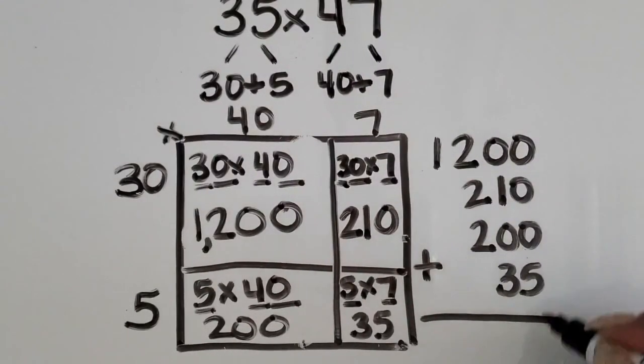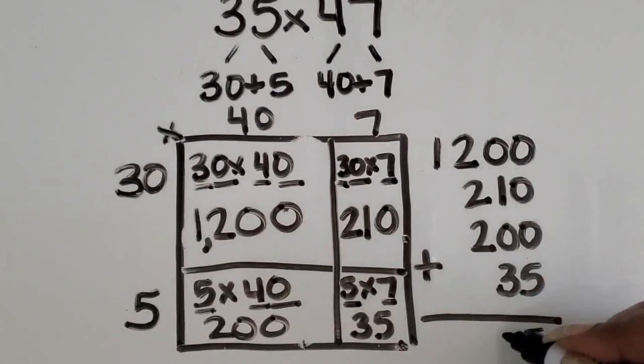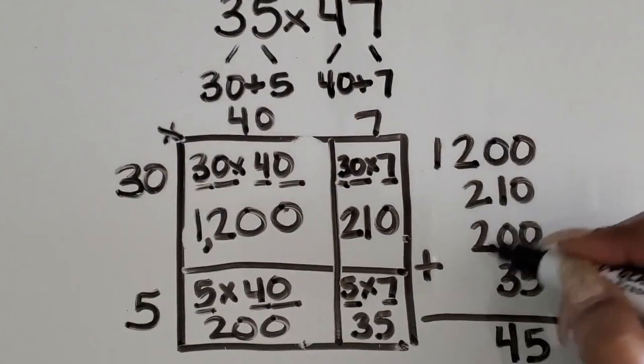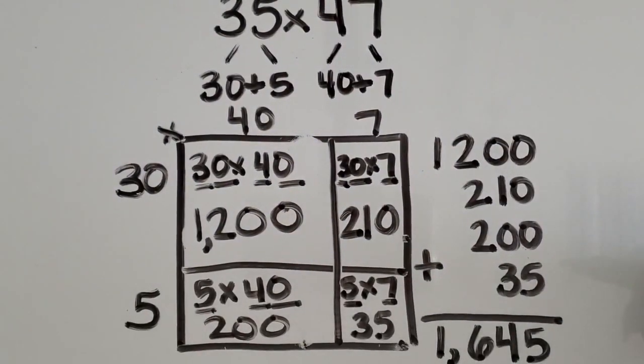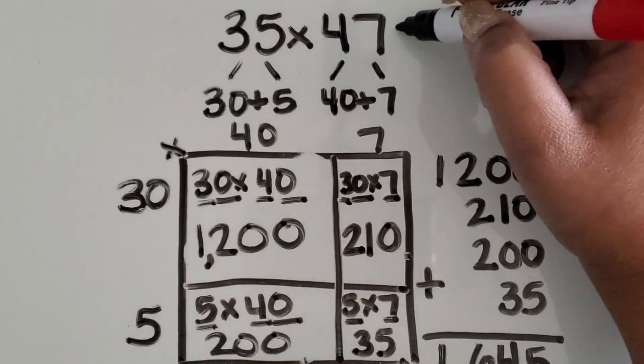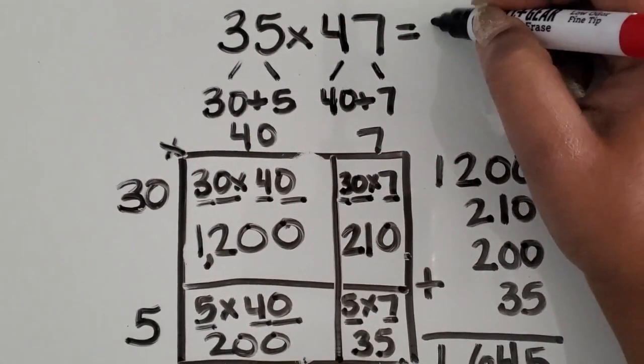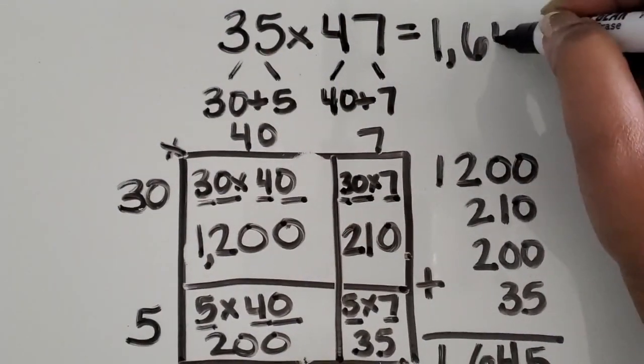So we have 5 ones, we have 4 tens, we have 6 hundreds, and we have 1 thousand. So the total product of 35 and 47 is 1,645.